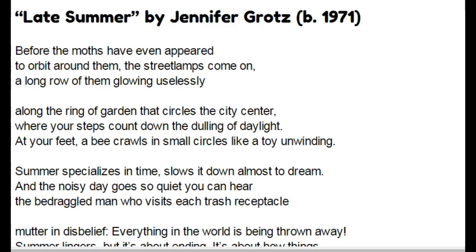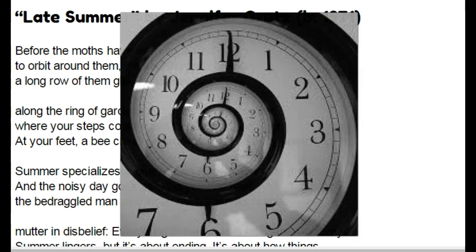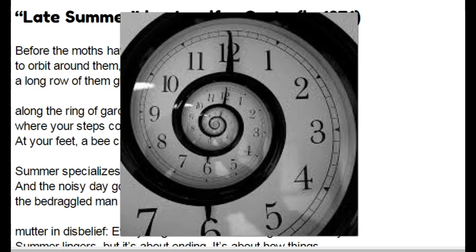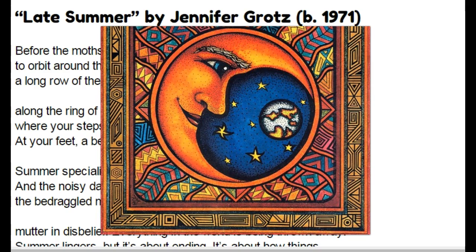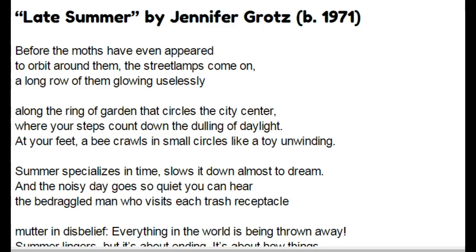'Summer specializes in time, slows it down almost to a dream.' Well, how does time move? We think of clocks — clocks that run in a circle. Time is cyclical itself, it runs in a circle. The morning leads on to the evening, which leads on to morning, which leads on to evening. The image of the circle is a common image already in this poem, and that's reinforced by the repetition of sound attached in two places in the second stanza to the word 'circles.'